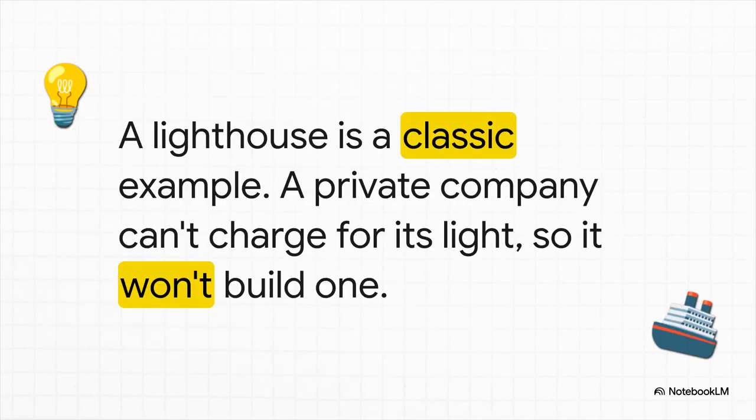The classic example here is a lighthouse. Think about it — you can't put a toll on a beam of light, you can't stop ships from using it. So if you're a private company, why would you ever build one? You can't make any money. People will just wait for someone else to build it and use it for free. That's called the free rider problem, and it's why the market on its own just won't provide these kinds of goods.